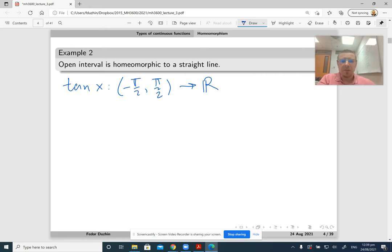Or another example, the logistic function f of x equals 1 over 1 plus e to the minus x, the one that is widely used in artificial intelligence. This is a homeomorphism from the real line to the interval from 0 to 1.